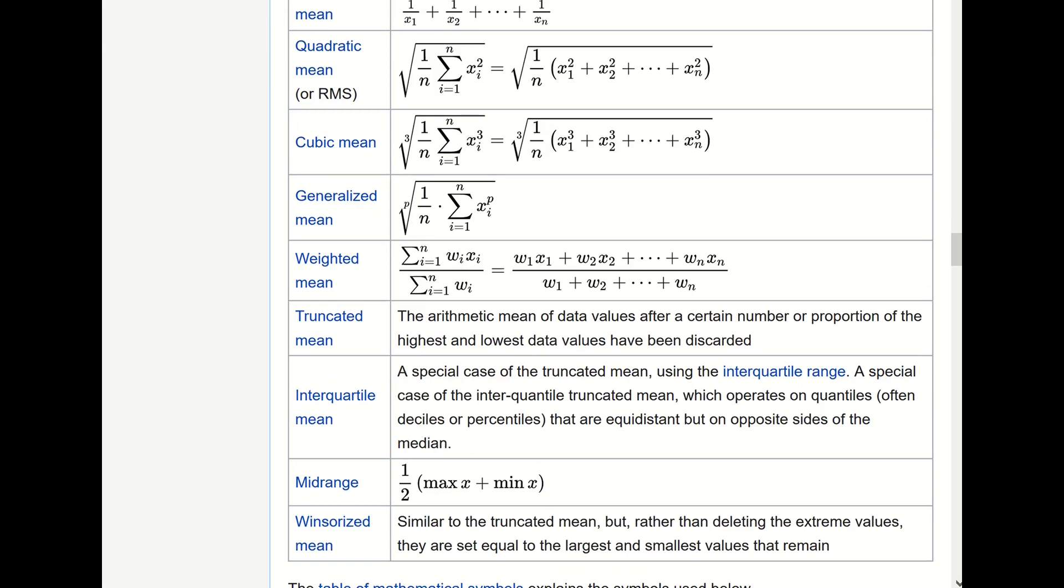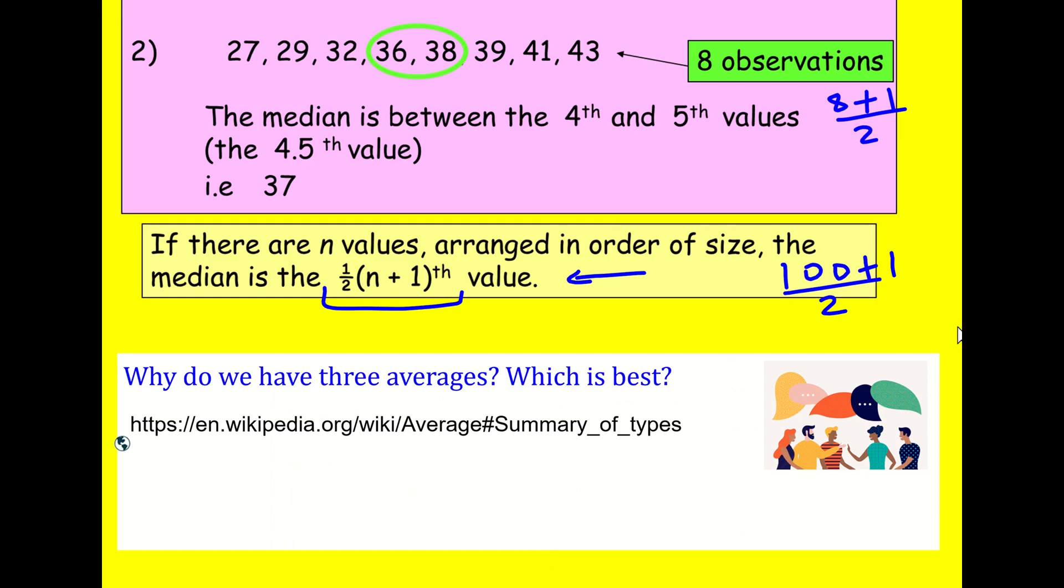So the three that you learn, they're the most common, but there's absolutely loads. And they, you know, some of them just have, they're useful in some situations. And they, I'm not going to go into any more detail than that. And for A-level maths, we don't, we don't need to be aware of that. But I wanted you to be aware that there are not just three averages. There are more than three.